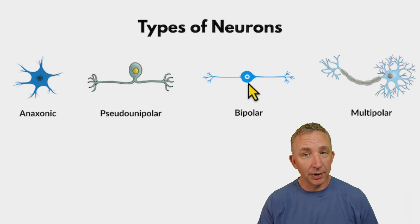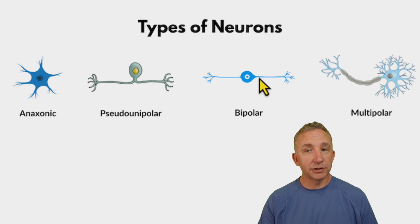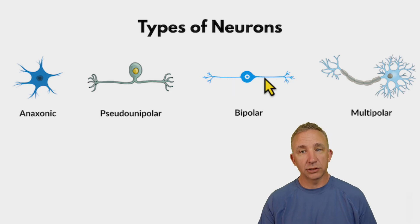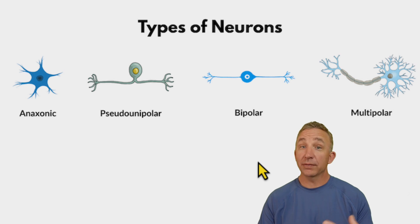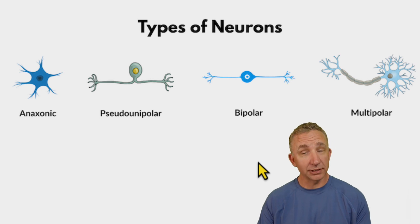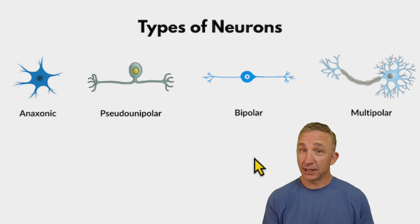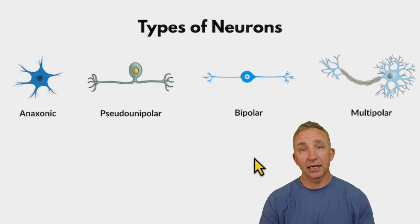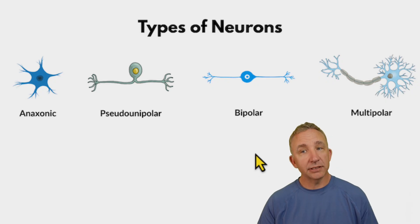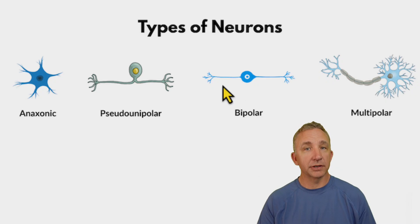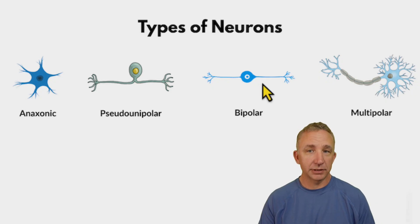Versus bipolar — now I truly have two extensions coming off the cell body, one and two, so we refer to that as bipolar. Where we tend to see these are special senses. Our eyes are loaded with bipolar neurons. So special meaning these are specialized nerve cells to coordinate things like taste, hearing, and vision. When we get to vision and talk about the different receptors within the retina, we'll talk about bipolar cells.